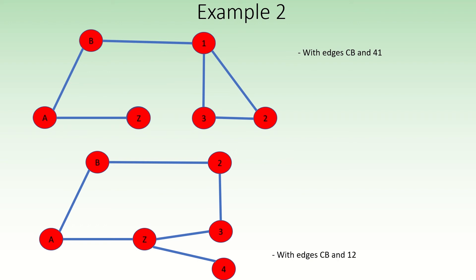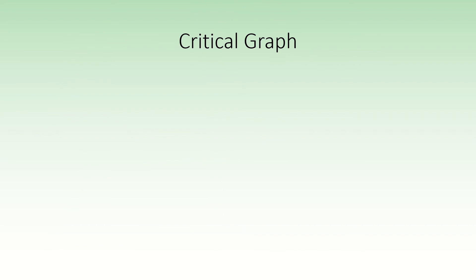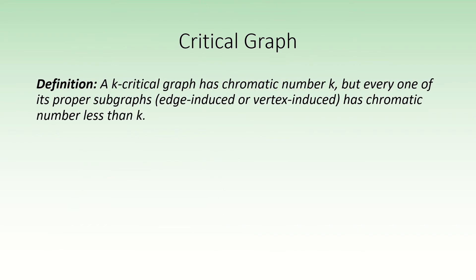Next, let's take a look at why the Hayosh construction is important. First, we'll need the concept of a critical graph. A k-critical graph is a graph that requires k colors to properly color, while all of its proper subgraphs require less than k colors to properly color. Essentially, removing any vertex or any edge from such a graph reduces its chromatic number.